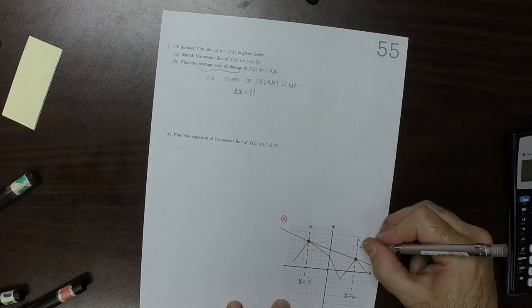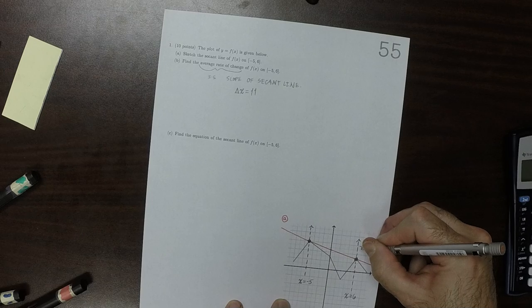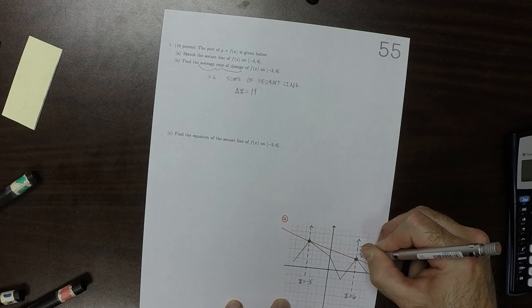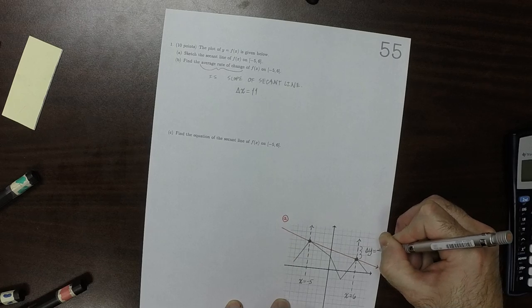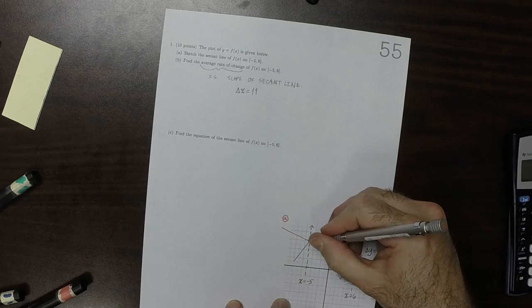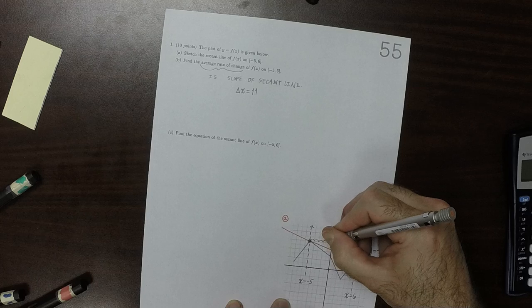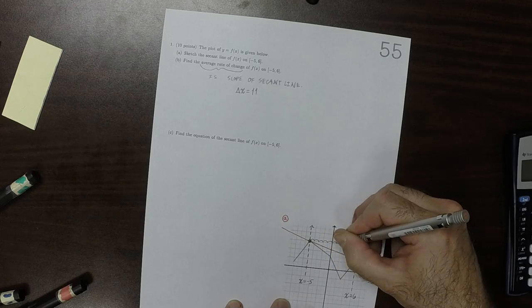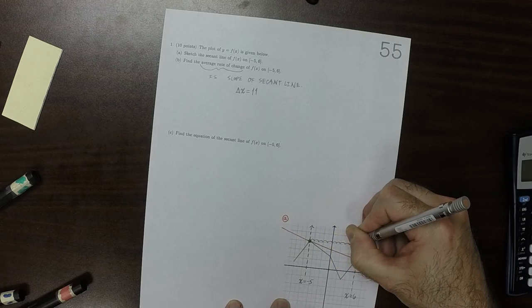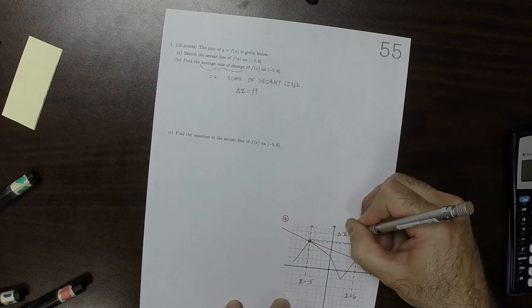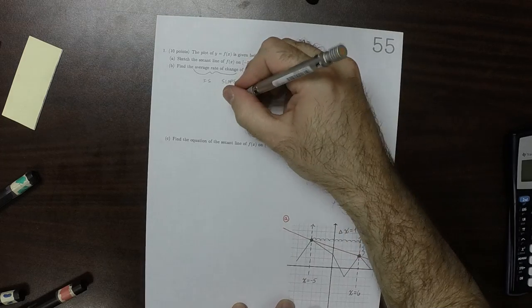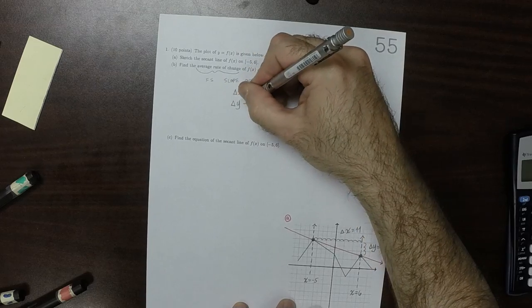And then the change in Y, 1, 2, 3. The change in Y is negative 3. This is 1, 2, 3, 4, 5, 6, 7, 8, 9, 10, 11. The change in Y is negative 3.